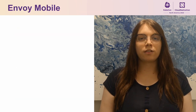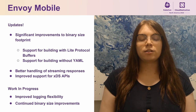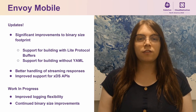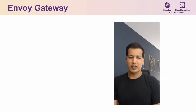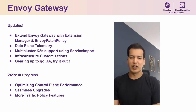Envoy Mobile has made further improvements to the binary footprint size and has better streaming response handling and improved support for the XDS APIs. Last but not least, Envoy Gateway continued to add features such as exposing data plane telemetry and multi-cluster Kubernetes support using service import as a backend ref. As we gear up to GA soon, this is a great time to try it out and give us feedback.